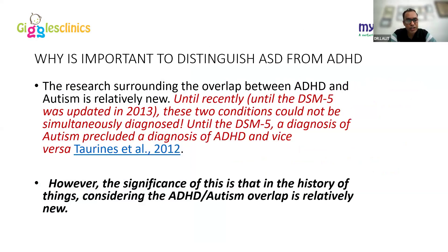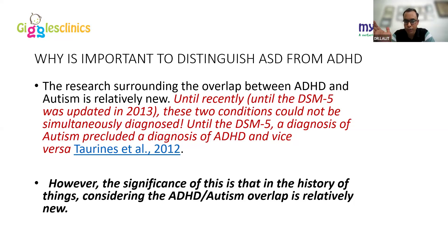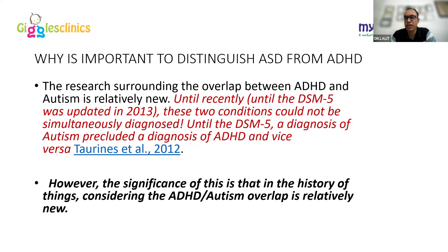The research on overlap between ADHD and autism is relatively new. Until DSM-5 was updated in 2013, these two conditions could not be simultaneously diagnosed. Under DSM-4, the criteria for autism and ADHD were completely separate with no overlapping picture, so you could only diagnose one or the other. DSM-5 now allows a comorbid diagnosis of both autism and ADHD if criteria for both are fulfilled.